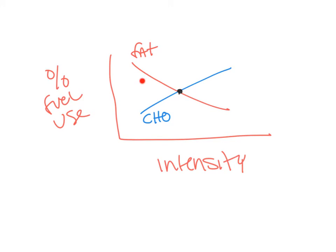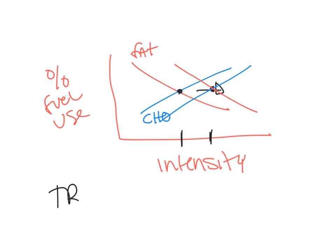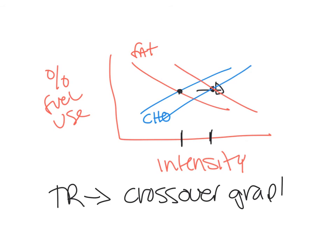Before the crossover point, fat is primary; after it, carbohydrate is primary. With training, this graph shifts to the right, meaning the crossover point occurs at a higher intensity. This means we can use primarily fat at a higher intensity than before training — fat is a greater contributor for longer. So with training, the crossover point shifts to the right, and everything switches over at a higher intensity.